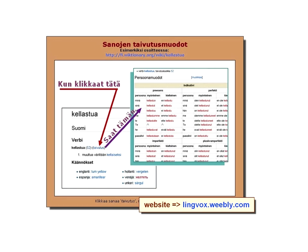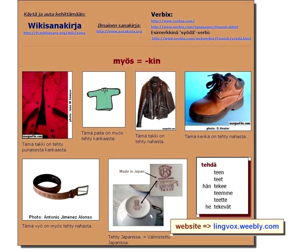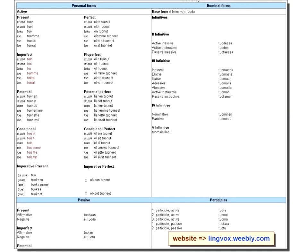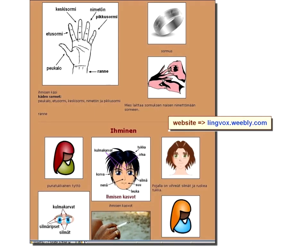Then I have quite a lot of this dictionary where you click here and you get all these conjugations from this word. 'Kellastua' — it means 'become yellow.' And then I have this Wiktionary, and a dictionary — very big — and so on. It's just hints for the person that is studying. Here is more of these conjugations.